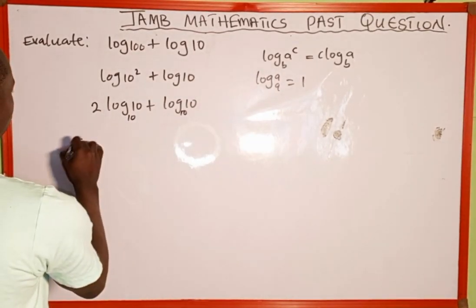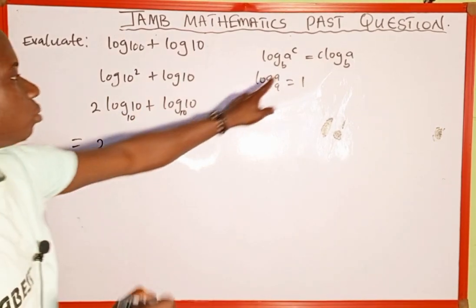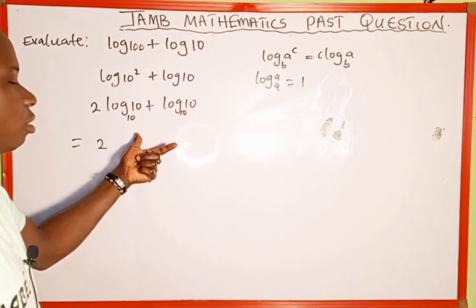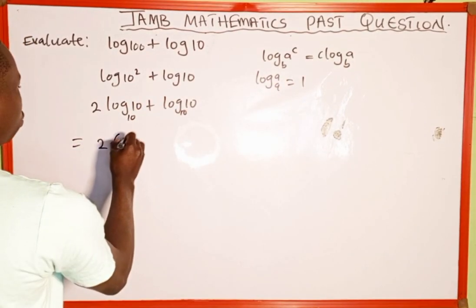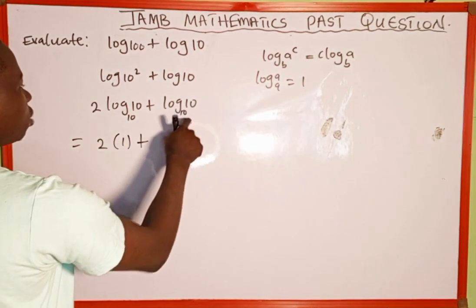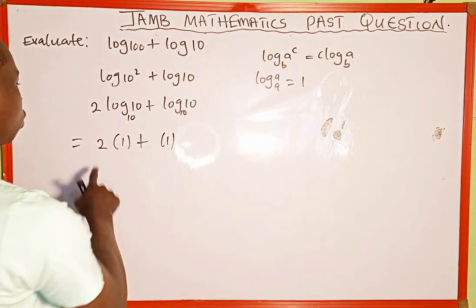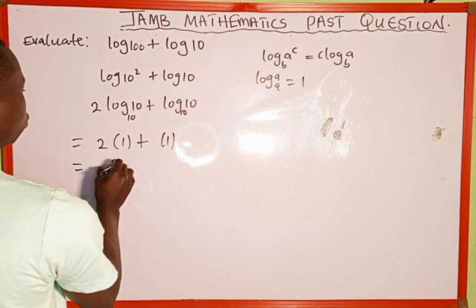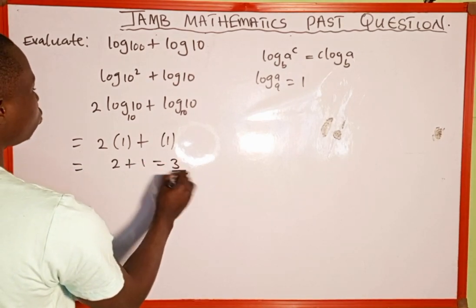So this is going to be equal to 2 log 10 to base 10. 10 and 10, the number and the base are the same, so this is going to be 1, then plus log 10 to base 10 is the same as 1. 2 multiplied by 1 is 2, then plus 1 equals 3.